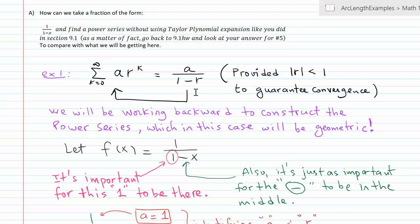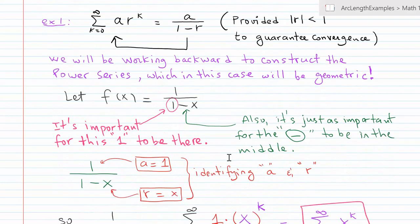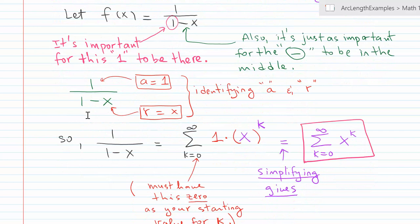You had to use a over 1 minus r to figure out what the series converges to. What we're going to do today is going backward. So we're going to be given a function f(x) = 1 over 1 minus x. A couple of very important areas we have to keep an eye on that needs to happen every time we have a fraction before we can use the formula: this 1 in the bottom left corner needs to be there, and also the negative sign in between those two terms in the denominator needs to be there.